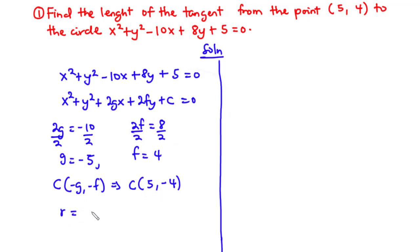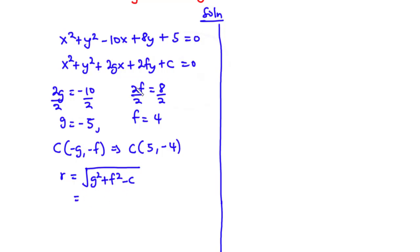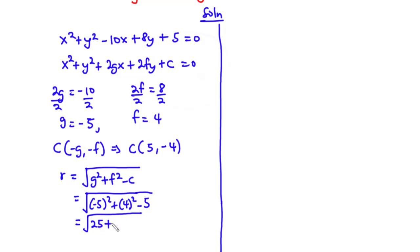The radius is given by √(g² + f² − c). Substituting g = −5, f = 4, and c = 5: radius = √(25 + 16 − 5) = √36 = 6 units.